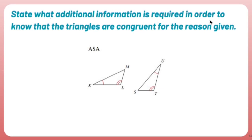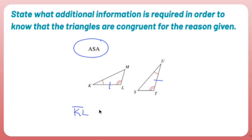State what additional information is required to prove the triangles congruent by ASA. ASA requires an angle, an included side, and another angle. I already have two angles. I need to show that the side between those angles is congruent — that's side KL congruent to side UT (K matches U and L matches T, so the order matters). With that, I have angle, side, angle — ASA proven.